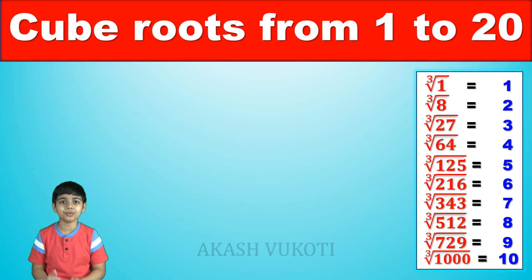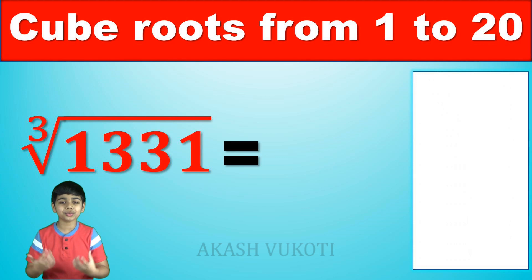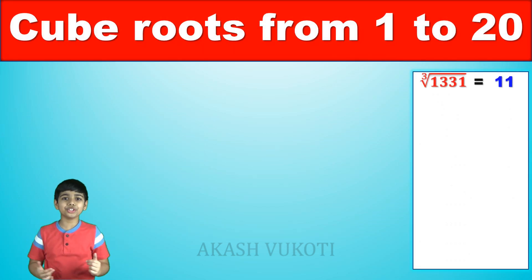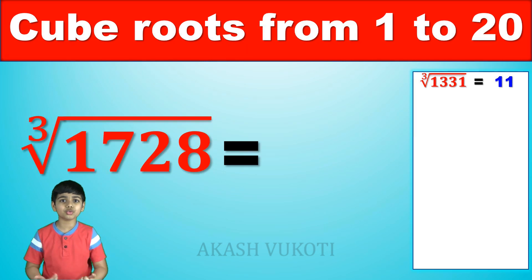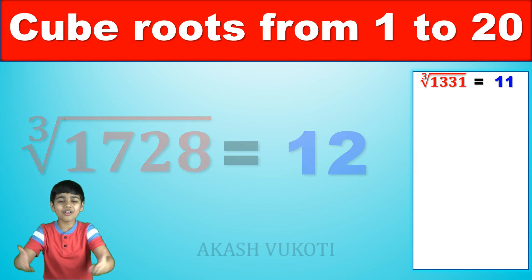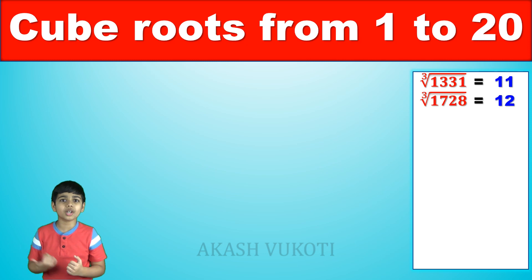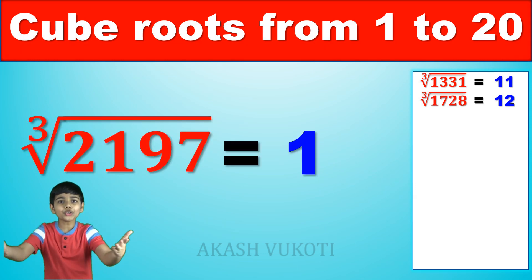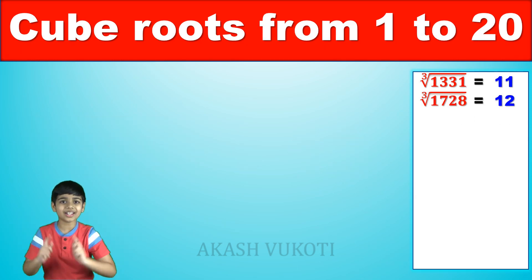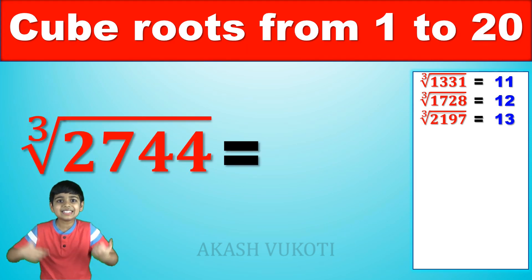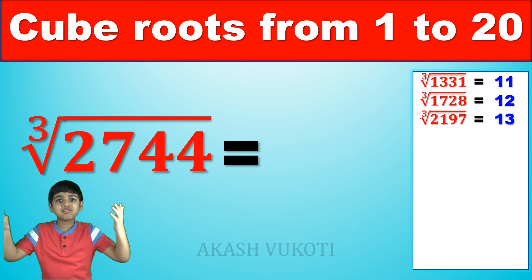We're halfway through. The cube root of 1,331 is 11. The cube root of 1,728 is 12. The cube root of 2,197 is 13. The cube root of 2,744 is 14.